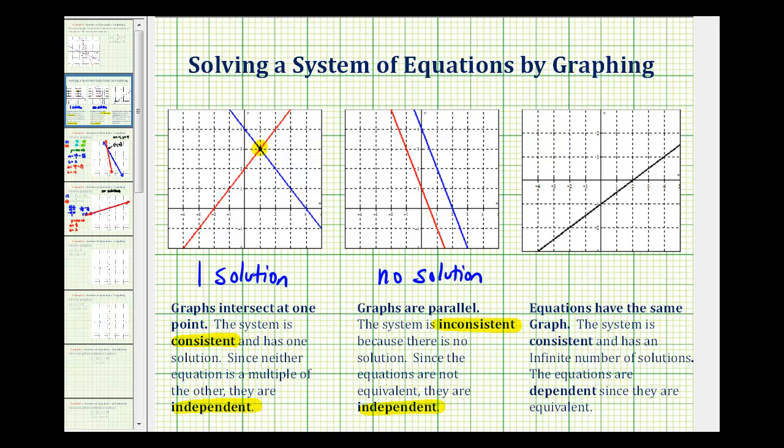The last possibility is the two lines coincide, or they're on top of one another, so they have an infinite number of points in common, therefore there's an infinite number of solutions. When this happens, the system is consistent, and the equations are dependent.